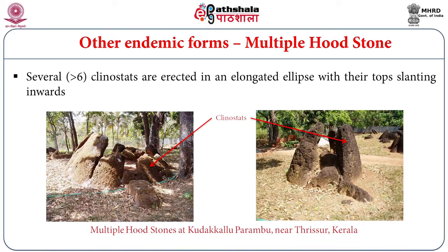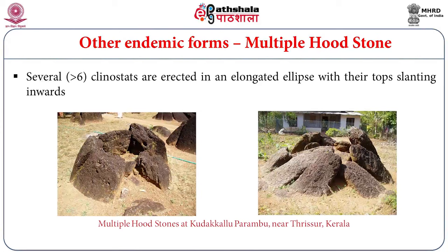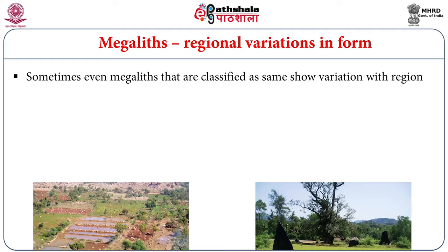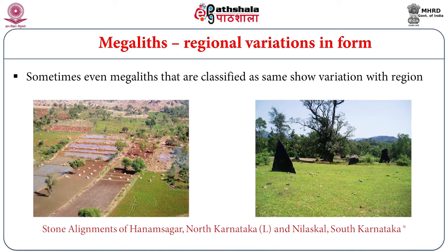Here we have another important megalithic form called multiple hoodstones. In this case, you see several hoodstones placed all around facing the center, forming a chamber. But there is no capstone here — that is why it is different from the Kodakallu and is interpreted as a distinct burial type. Here we see another endemic form — alignment — which is found mainly in Kerala and also in Karnataka, with not many sites reported. You can see rows of stones planted for some purpose; we don't know its significance, but we are sure they were planted intentionally to convey some meaning.